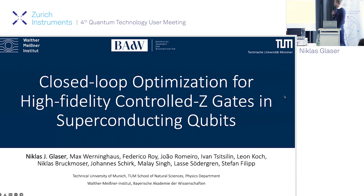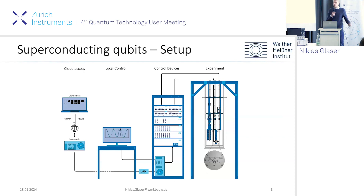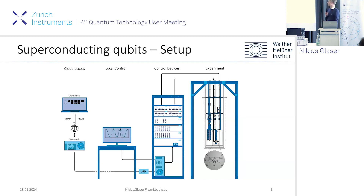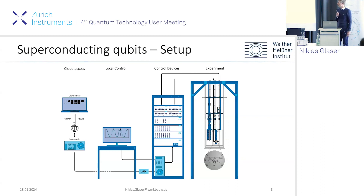Thank you for the introduction and the opportunity to be here. When we talk about superconducting qubits and the full procedure, we care mostly about having access to the quantum computer with everything working — a Qiskit client performing quantum operations. But as most of you know, the control devices connected to experiments have to provide nice gate fidelities, and we focus on how to use closed-loop optimization to achieve even higher gate fidelities.